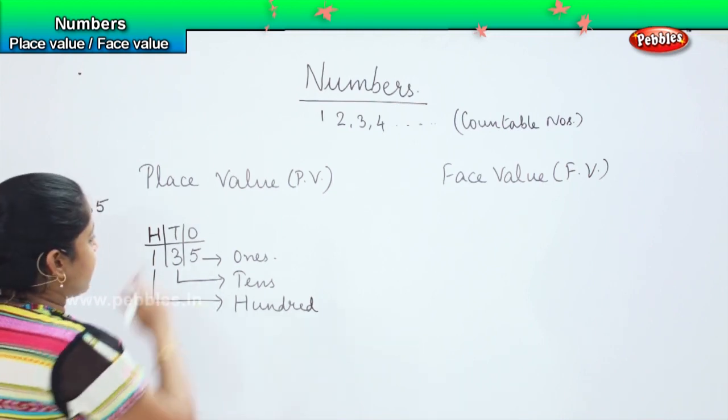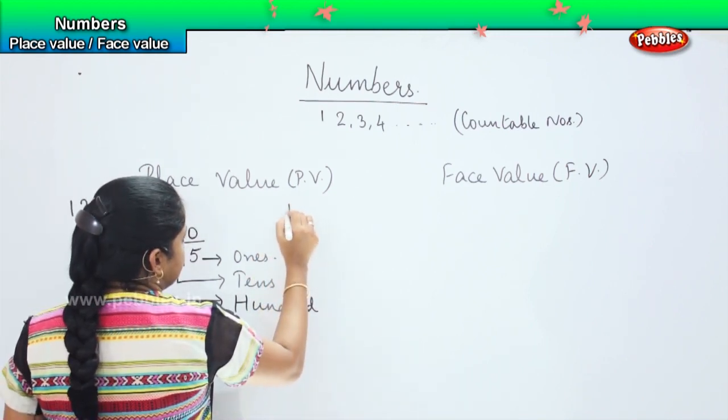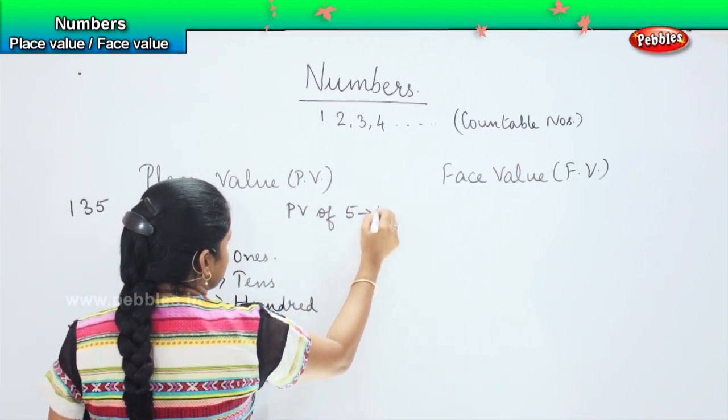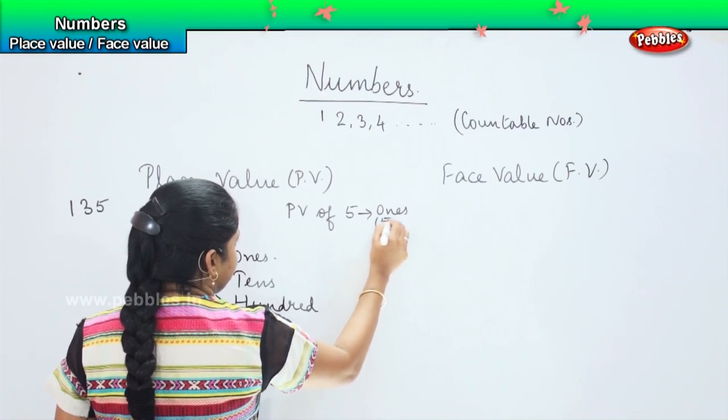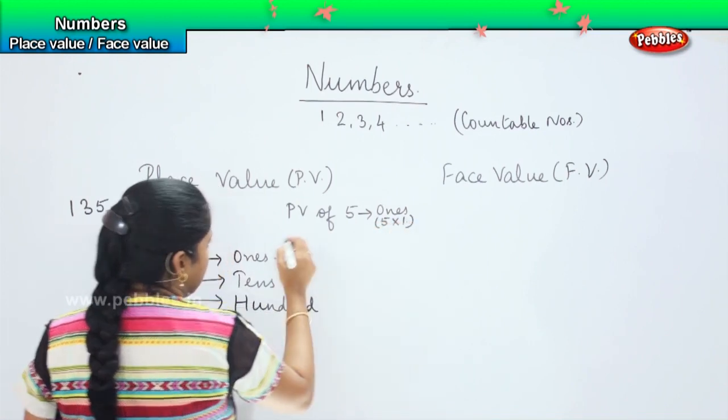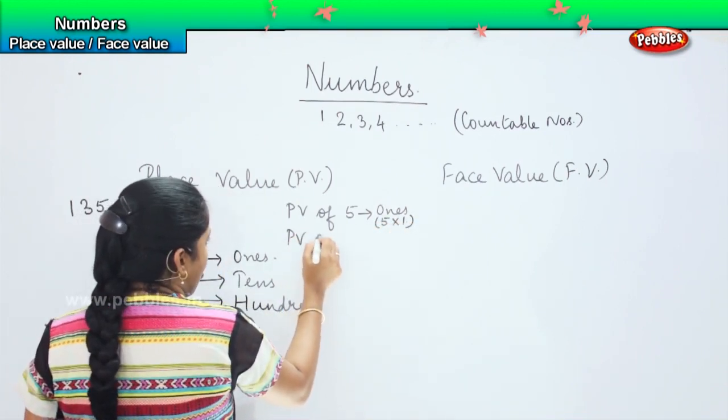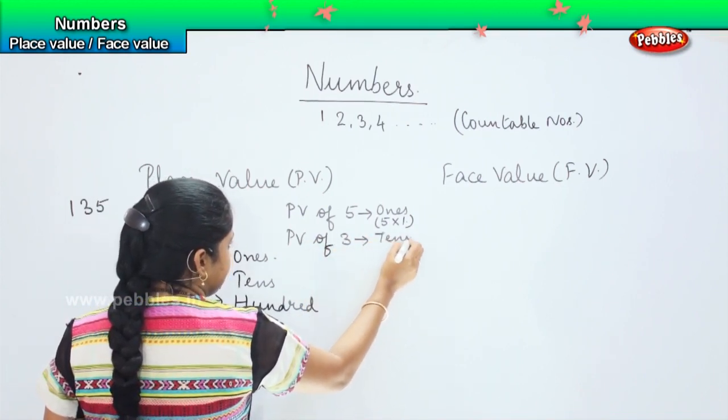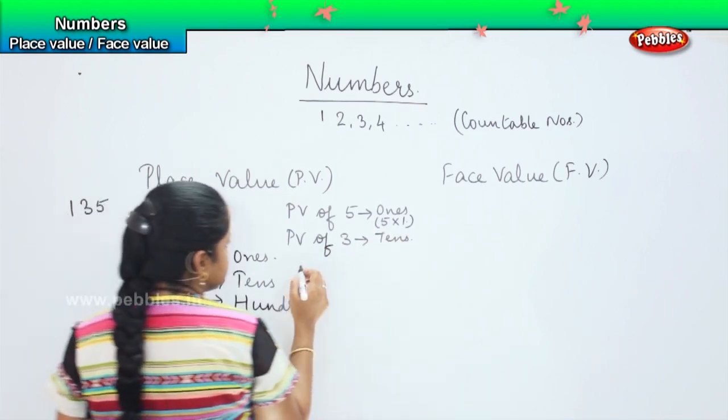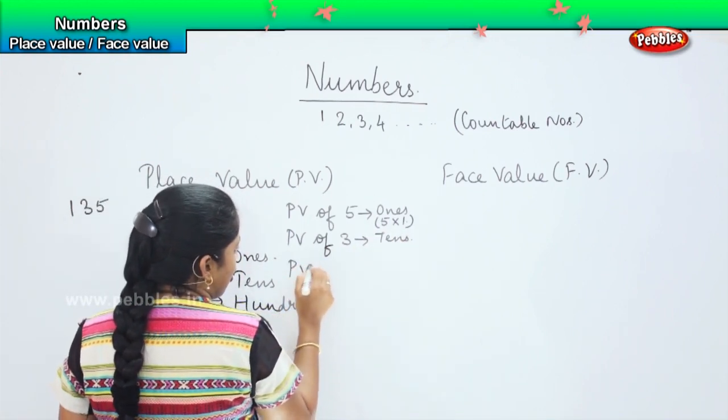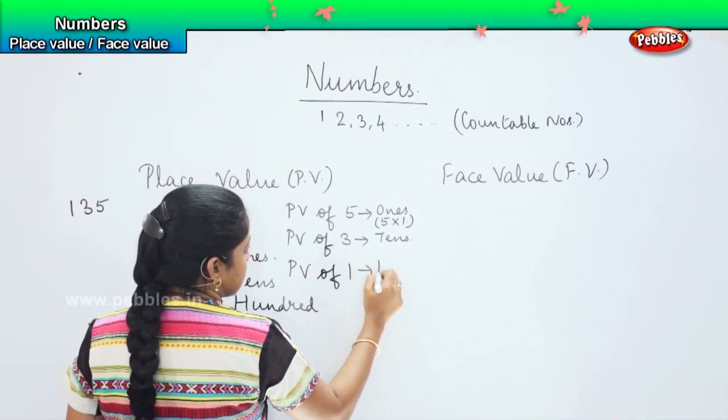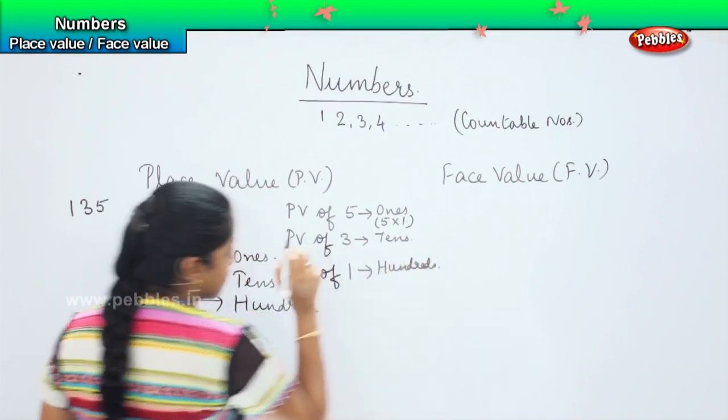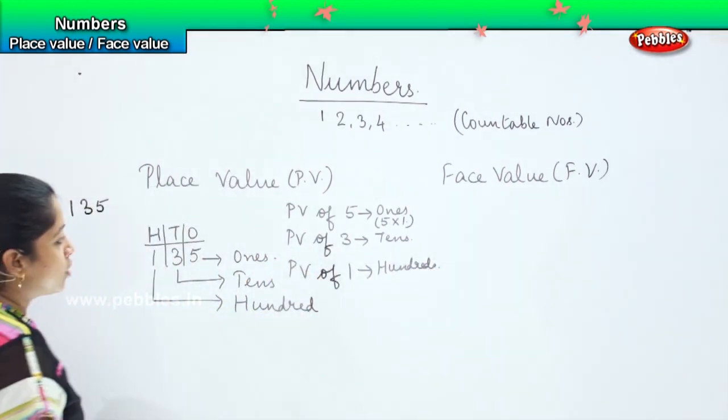So, if I say the place value, I will say that the place value of 5 is ones, which is nothing but 5 into 1. The place value of 3 is tens. And the place value of 1 is hundreds.